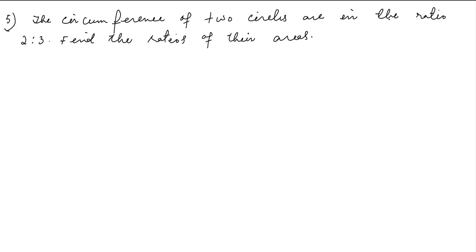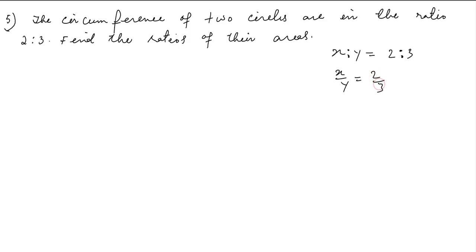The circumference of two circles are in the ratio 2 is to 3, then find the ratio of their areas. The next question: circle — the circumference ratio 2 is to 3, find the ratio of their areas. So we have x is to y equals 2 is to 3, which means x divided by y equals 2 by 3.